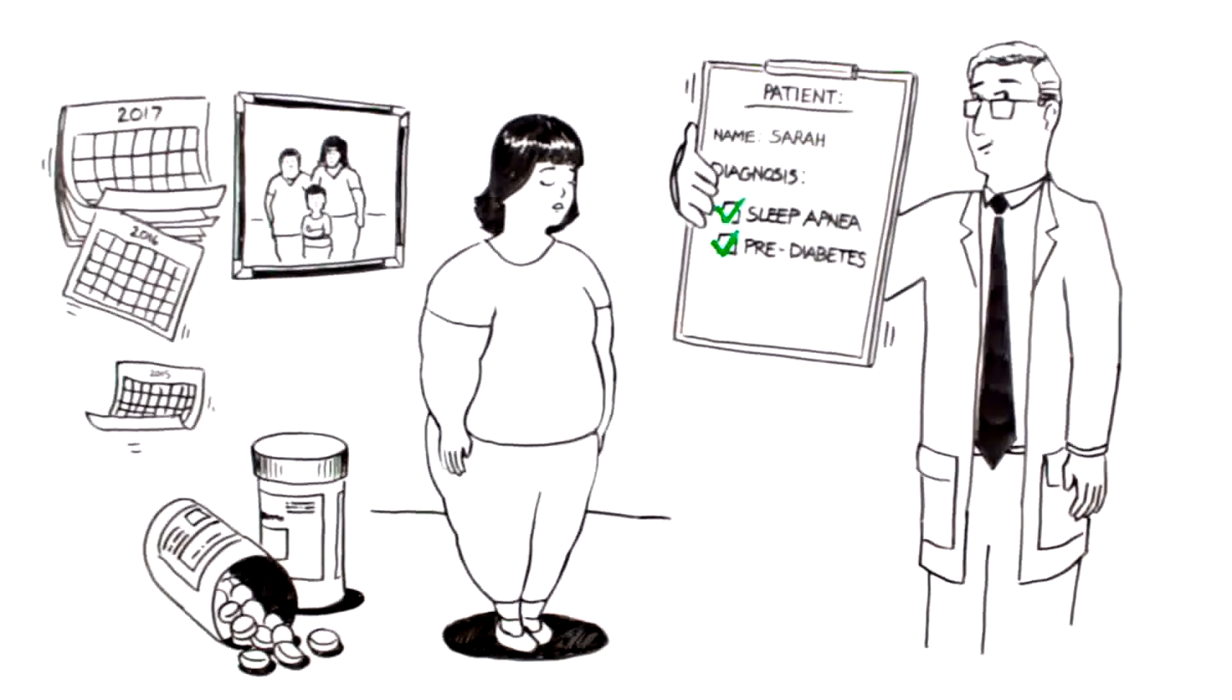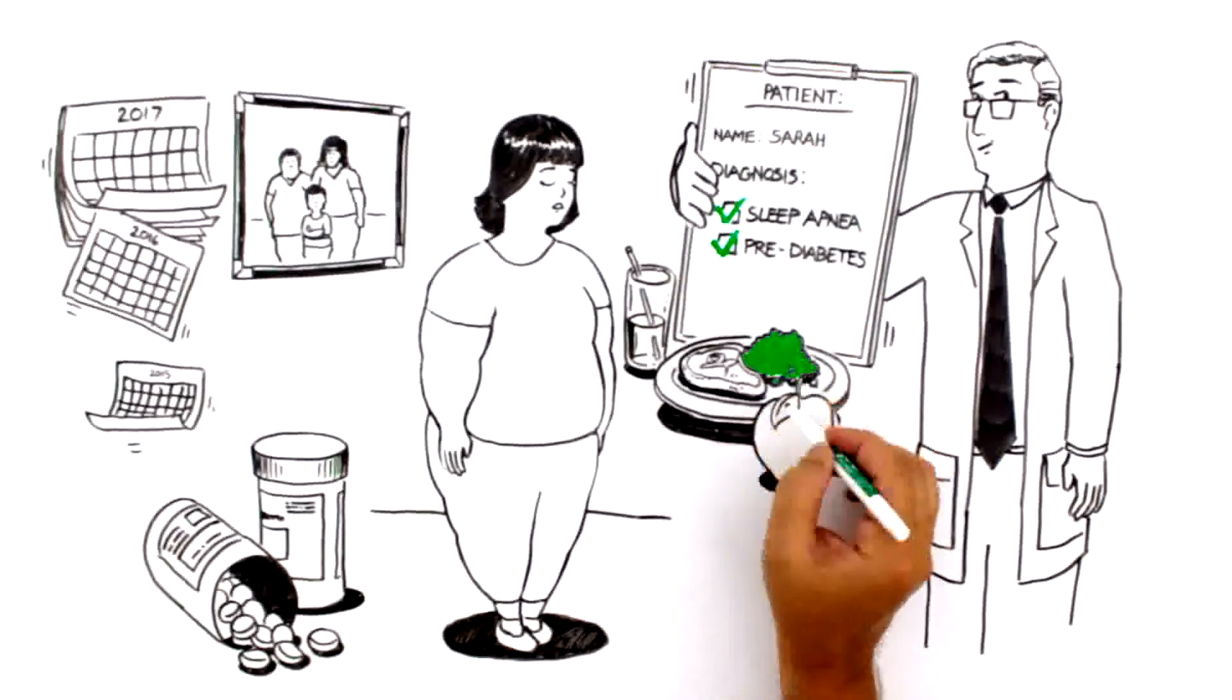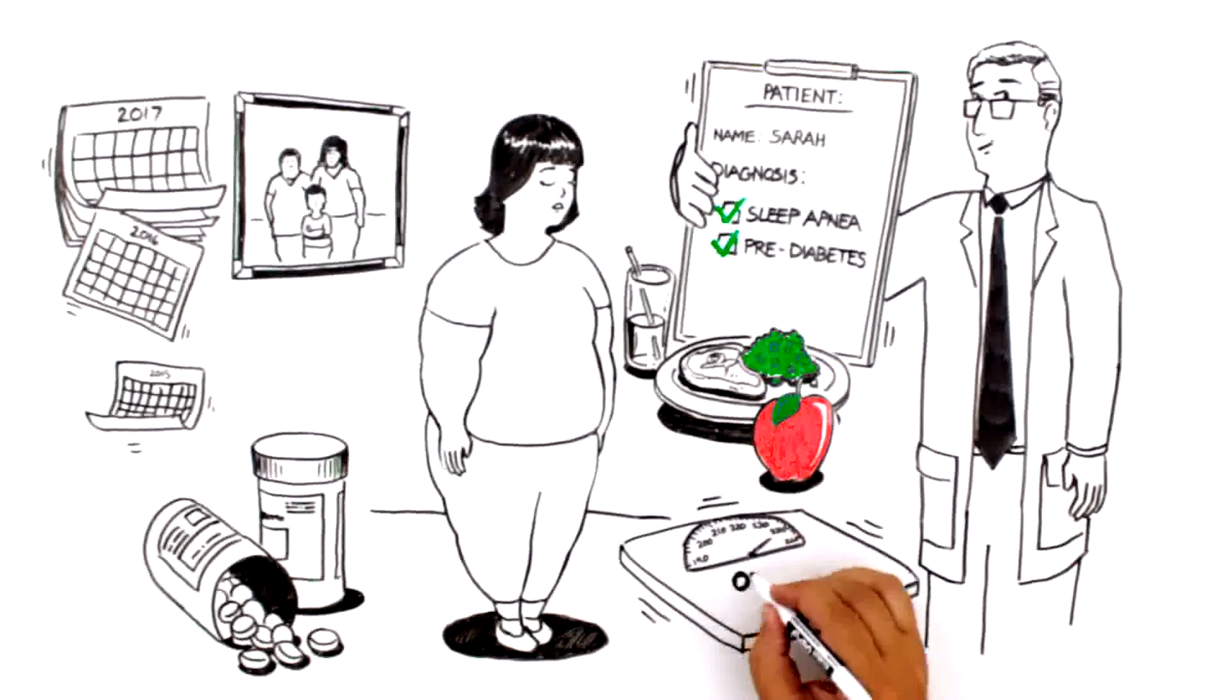She goes to the gym two or three times a week and eats a pretty healthy diet. But her weight is now out of control.